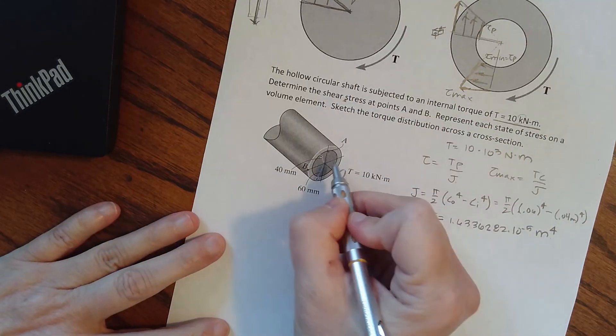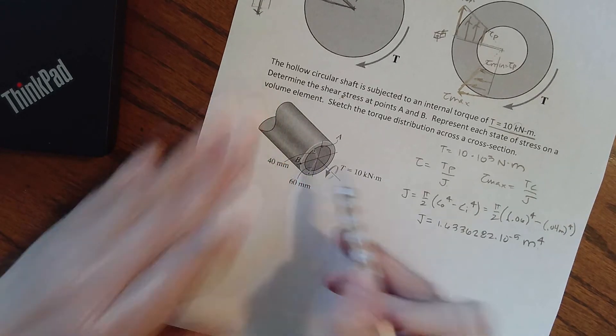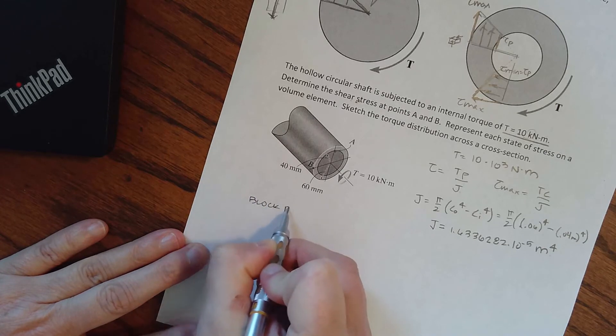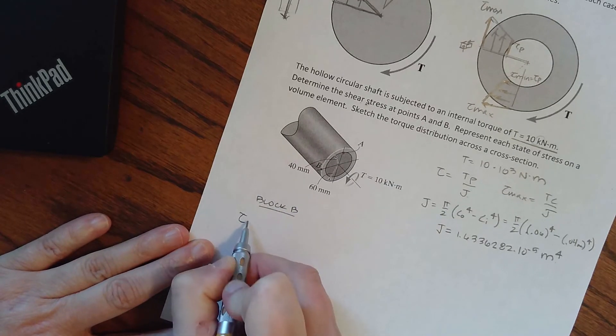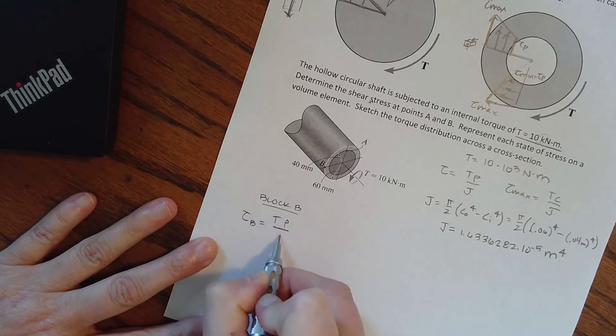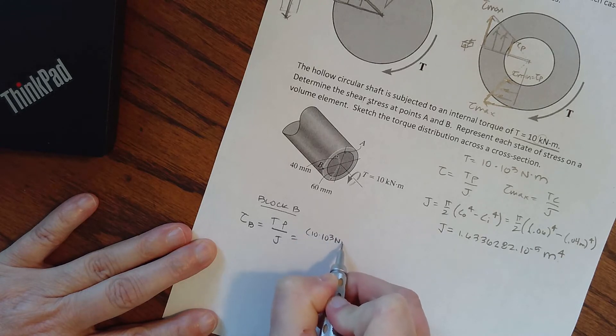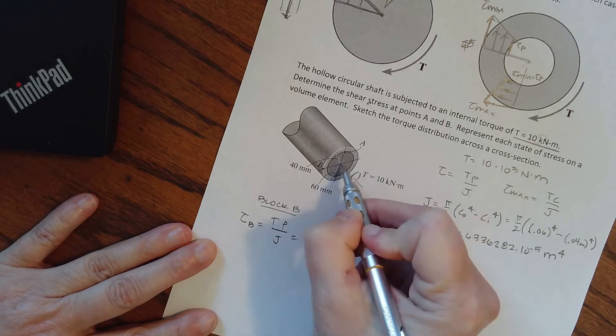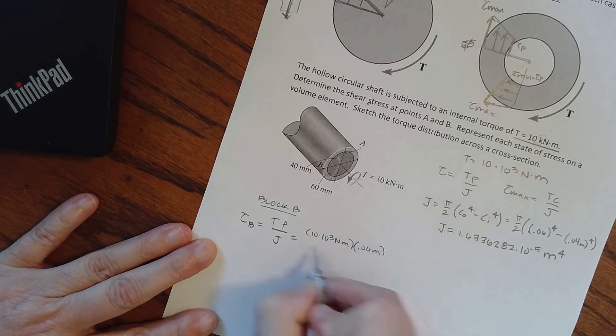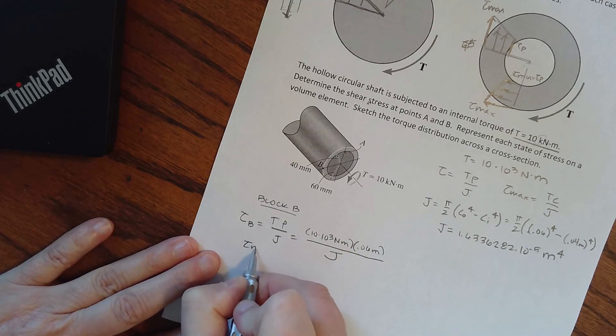So now if we are looking at block B, it is on the outside, so it's going to be our maximum. Our shear is going to be T rho over J, so we have 10 times 10 to the third newton meters, our radius is 0.06 meters divided by J.